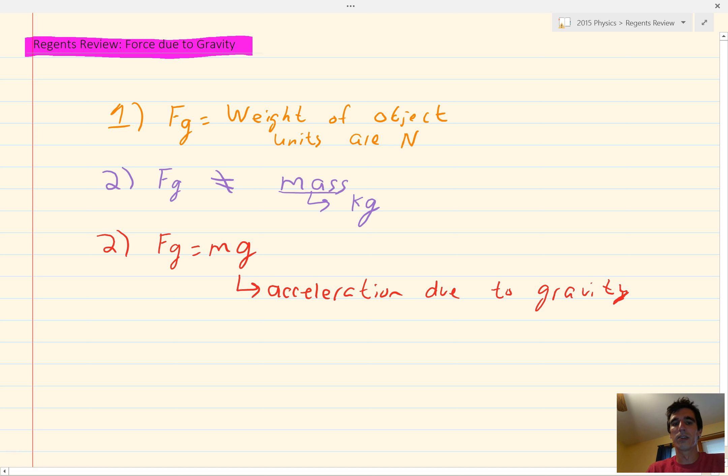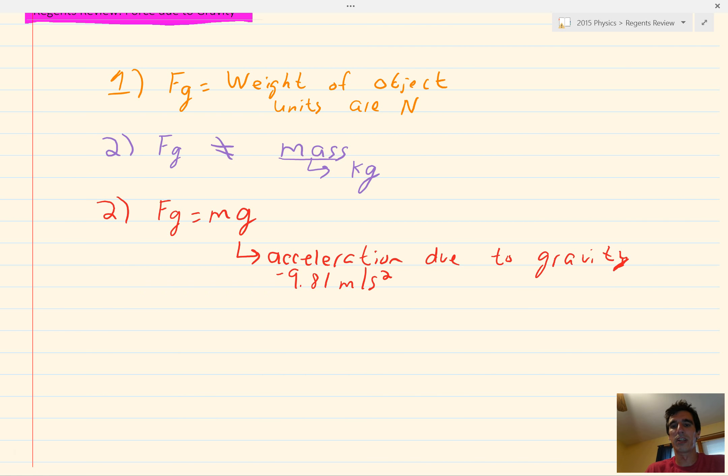And, on Earth, g is equal to negative 9.81 meters per second squared. If you look in your reference tables, the acceleration due to gravity is also referred to as the gravitational field strength.